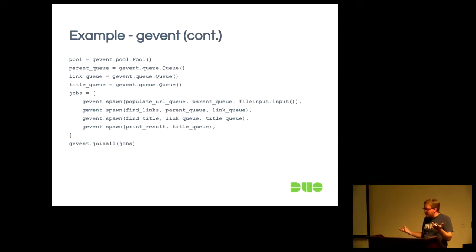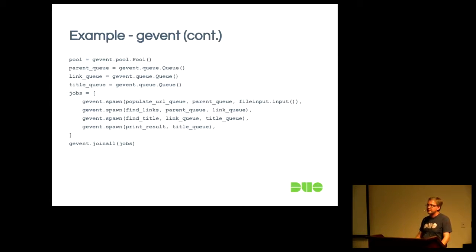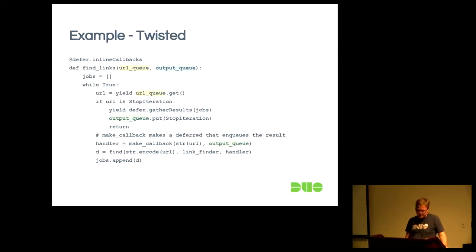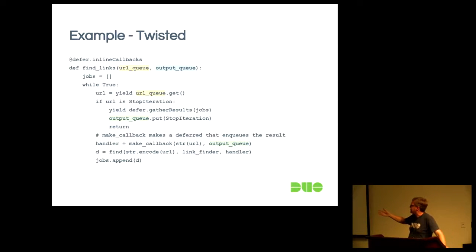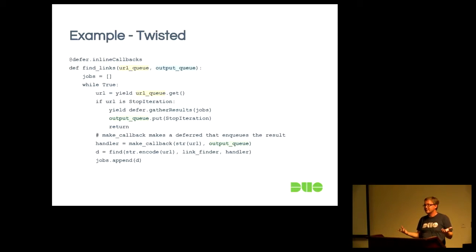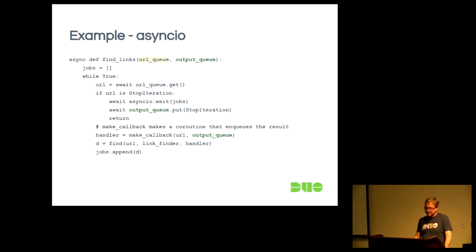Here we're wiring up Gevent: all these different tasks, all these different queues, we spawn them all and wait for them to be done. Twisted is a little different — we get something out of the queue, and if we get a StopIteration exception we know we're done and can exit. Otherwise we make a callback: when done, put data into the output queue, call our find. It requires linking a callback handler to the future value from find — not very elegant. AsyncIO has a similar but slightly different approach.